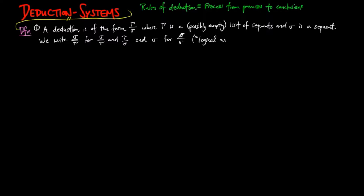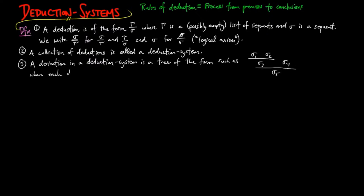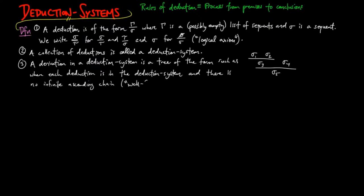Then sigma is called a logical axiom. A collection of deductions is called a deduction system. A derivation in a deduction system is a tree where each deduction is in the deduction system and there is no infinite ascending chain. This is what is also called a well-founded derivation. However, there may be instances where we assume the existence of infinite descending chains, depending on which fragment of logic we are working in.